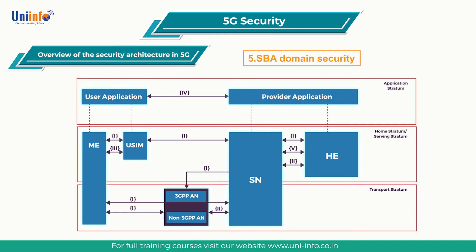SBA domain security is the set of security features that enables network functions of the SBA architecture to securely communicate within the serving network domain and with other network domains. Such features include network function registration, discovery, and authorization security aspects, as well as protection for the service-based interfaces. SBA domain security is a new security feature compared to TS 33.401.